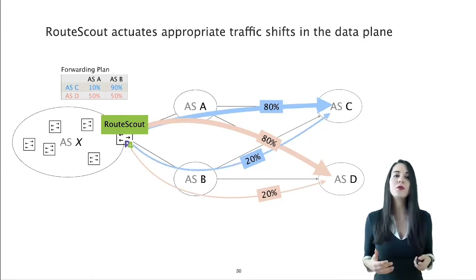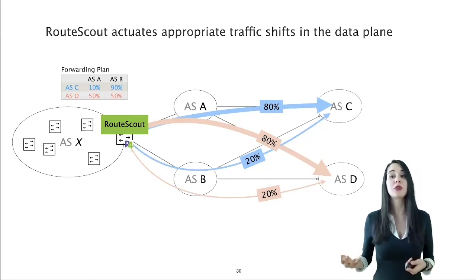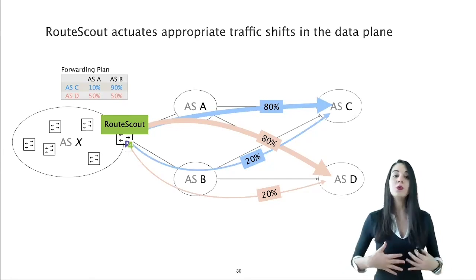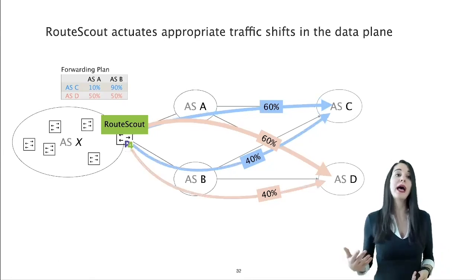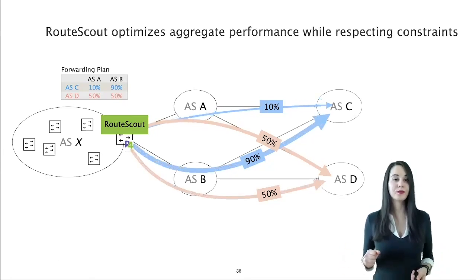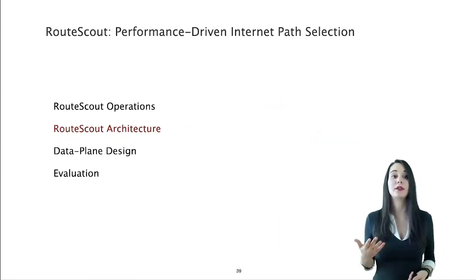Having a clear forwarding plan, RouteScout actuates appropriate gradual traffic shifts in the data plane. Concretely, it moves 10% of traffic to its appropriate next hop until it reaches the calculated plan. Having an idea of RouteScout's end-to-end operations, let's now look at its architecture.